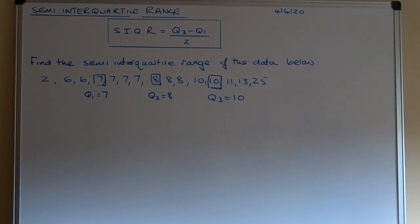So on the board is the example we used yesterday of the Sunday school outing and the teacher and we've listed Q1, Q2 and Q3. So let's do the example on the board. Find the semi-interquartile range of the data below.